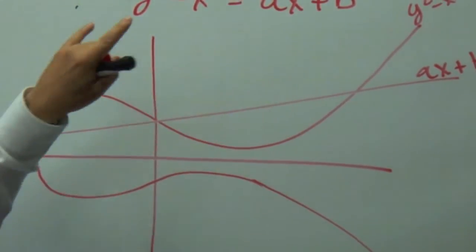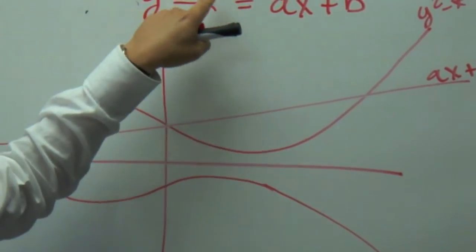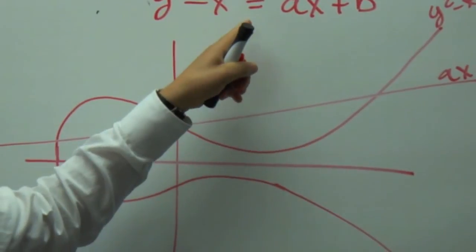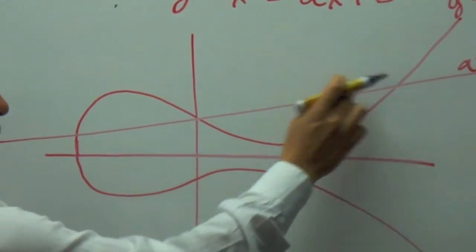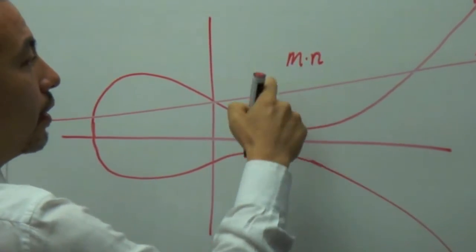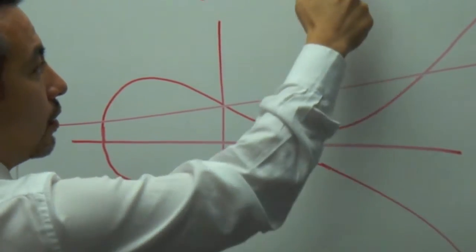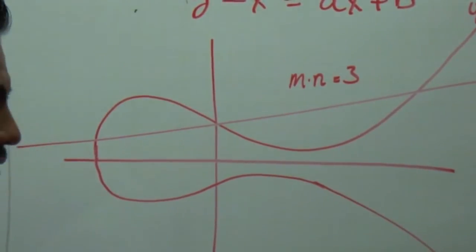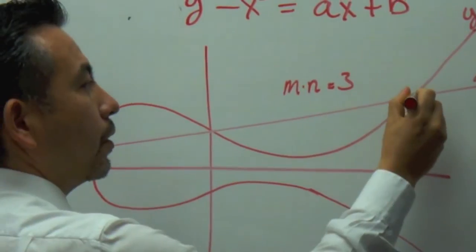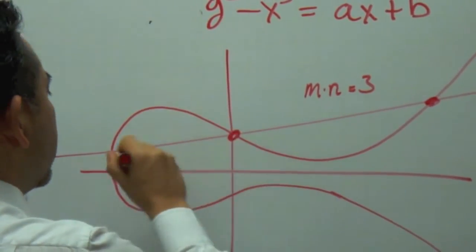Mordell's theorem, it says like if we have one function to the degree of 3, and we're going to put it equalized to another function of degree 1, the intersections will be m times n. m is 3, n is equal to 1, so this is going to be 3. So, it's three points, three rational points.